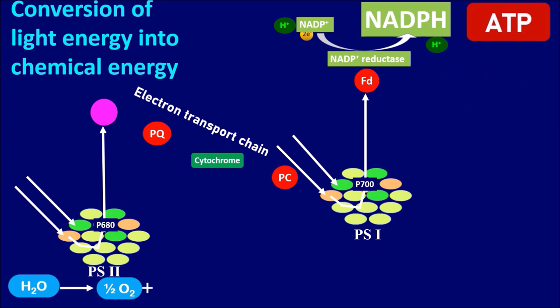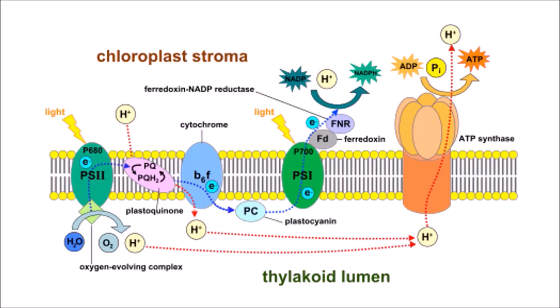These two energy rich compounds such as NADPH and ATP are the final results of light reaction which are used in the process of dark reaction. This is how the photochemical phase is represented in the thylakoid membrane involving photosystem 2 and photosystem 1.